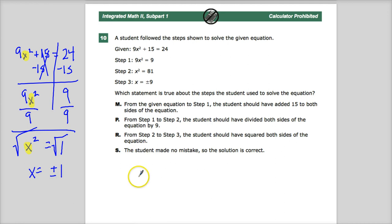I could actually test that if I want. Go back and say, okay, 9 times 1 is 9, plus 15 gives me 24. 9 times negative 1 squared would still be 9, plus 15 gives me 24. So this is the answer I'm looking for.